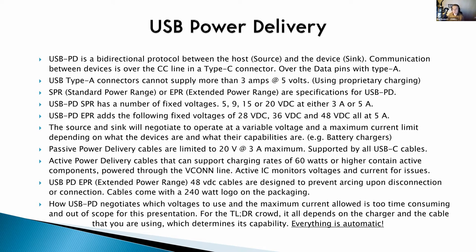USB Power Delivery is a bi-directional protocol between the source and the sink — that's the host and the device. In the specification they refer to the host and device as source and sink. All USB PD host and device communication happens over the CC line on a USB-C connector, or over the data pins on a Type A connector. Type A connectors are not rated for more than 3 amps at 5 volts, while USB Type C can handle much higher voltages.